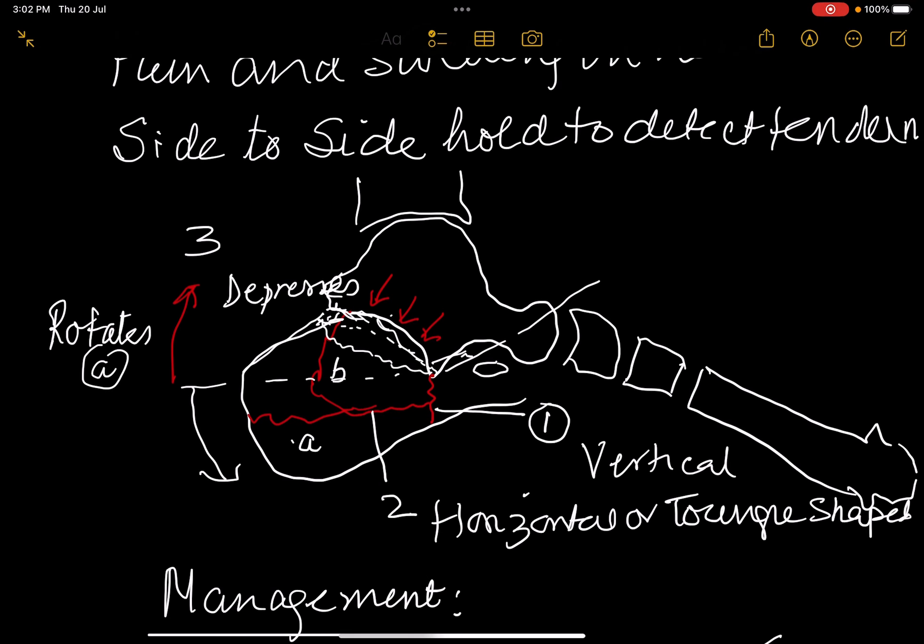The first part of the fracture is that the cruciate angle, the cruciate part of the talus, the point of the talus goes through the calcaneum creating a vertical fracture.